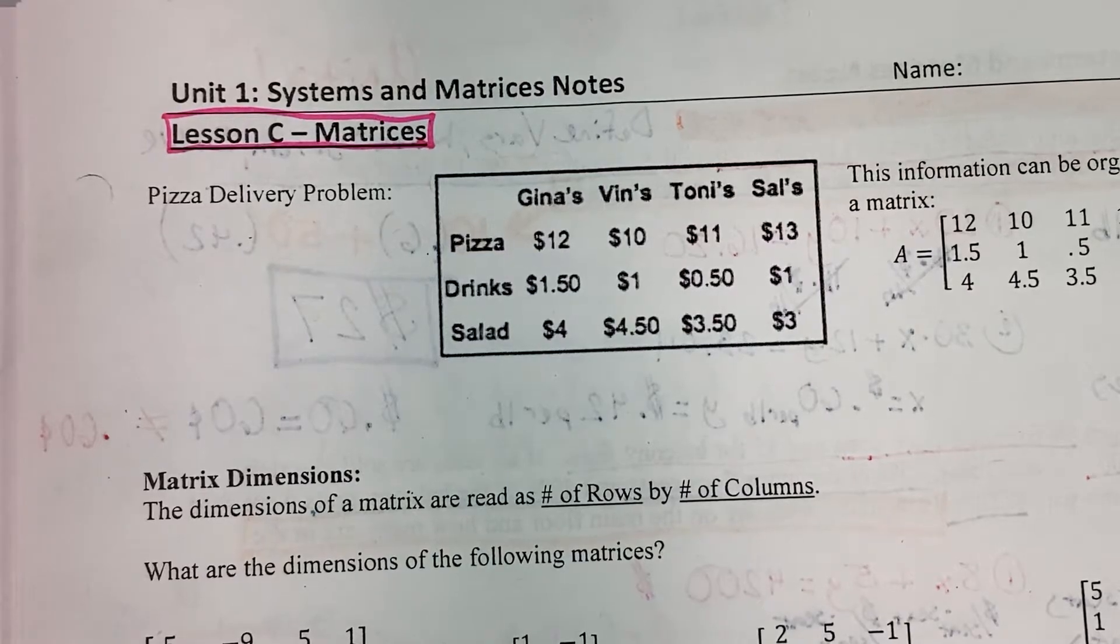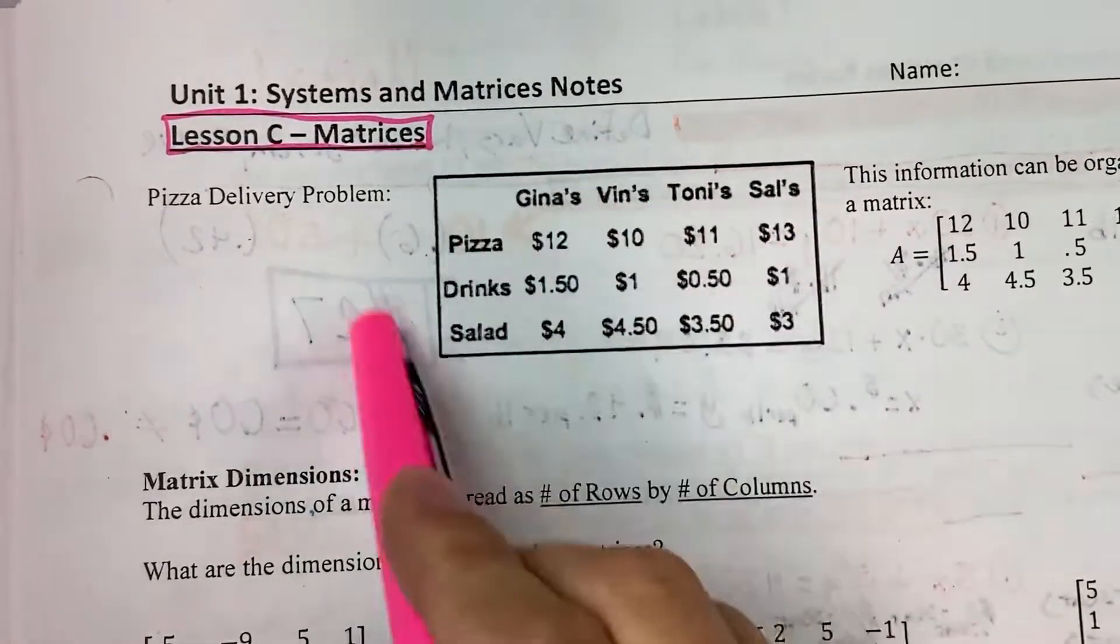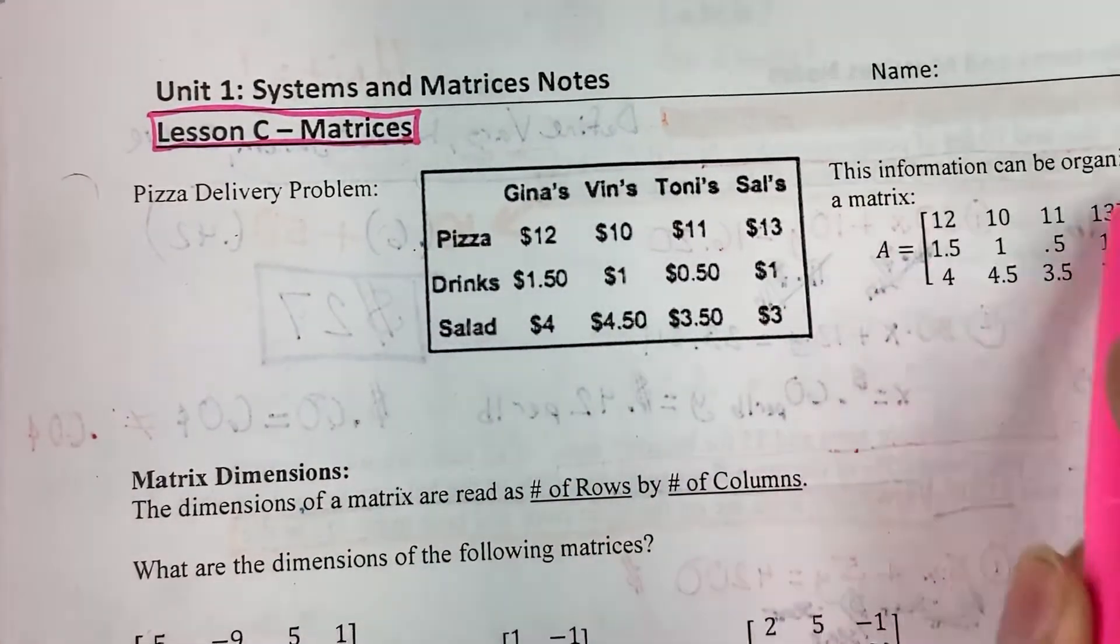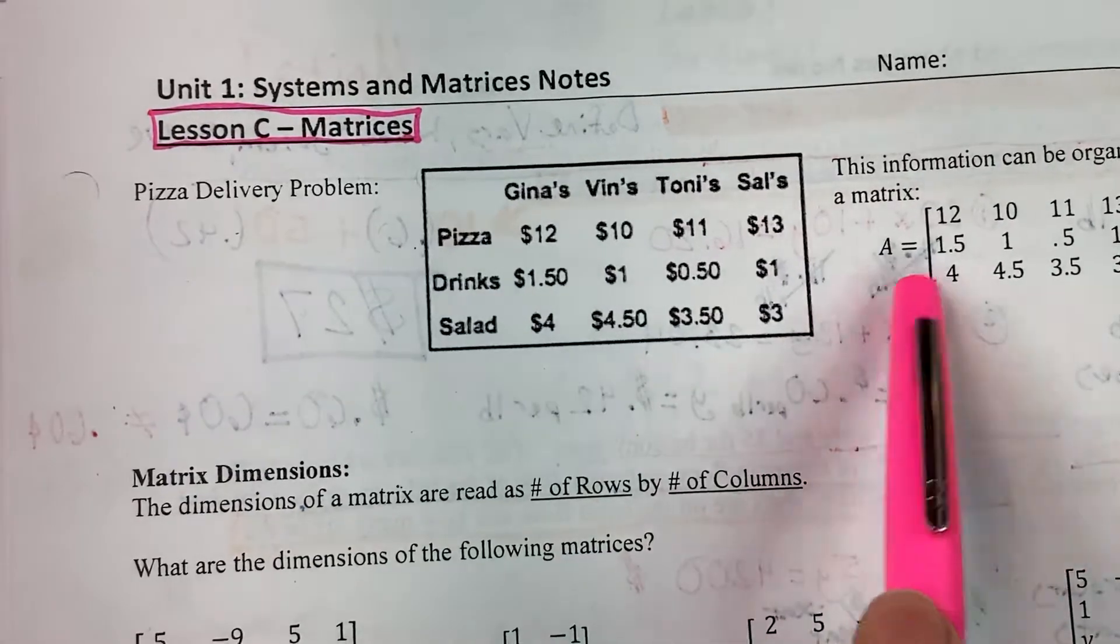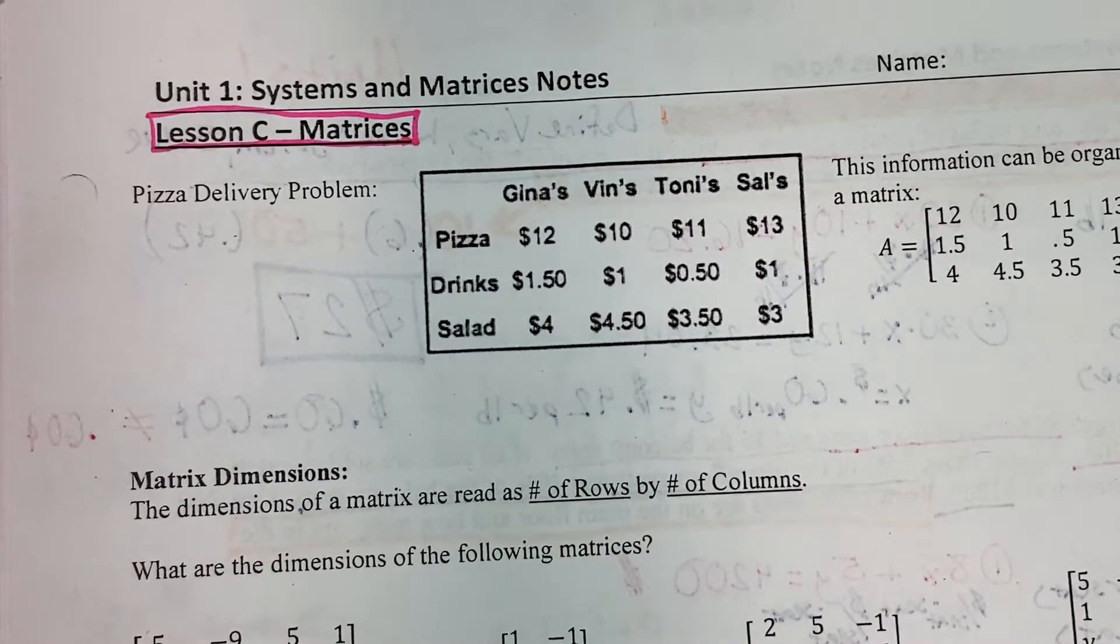So in this first section, we're just going to see that I can take information, and we can organize it into a matrix, which has square brackets and is set up as rows and columns.